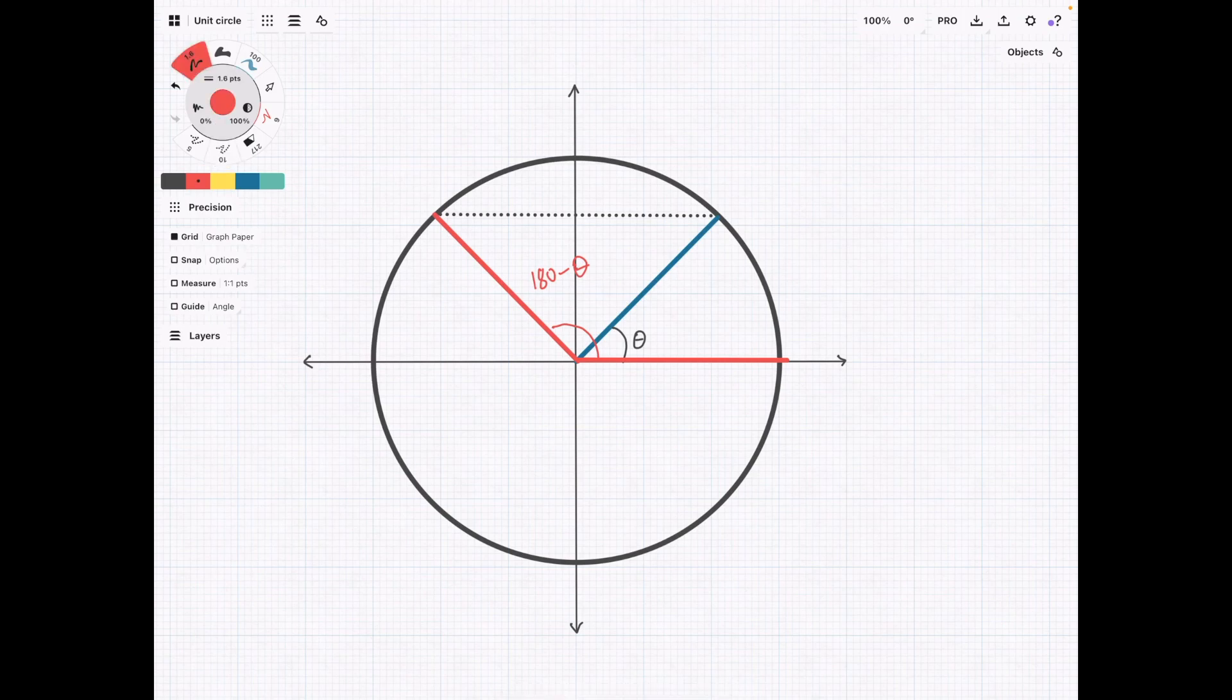And on the unit circle, the points where the angles intersect the circle have coordinates of cosine theta, sine of theta, where cosine theta is the x value and sine theta is the y value.